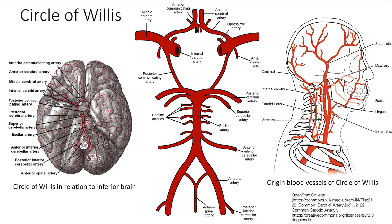Now let's talk about the circle of Willis. You can see the MCA here, the ACA going anteriorly, and the PCA. The circle of Willis is located at the base of the brain and is very important because it is where all your blood vessels anastomose, allowing you to preserve cerebral perfusion even if one vessel is blocked, as the anastomoses allow blood to reach other parts of the brain.